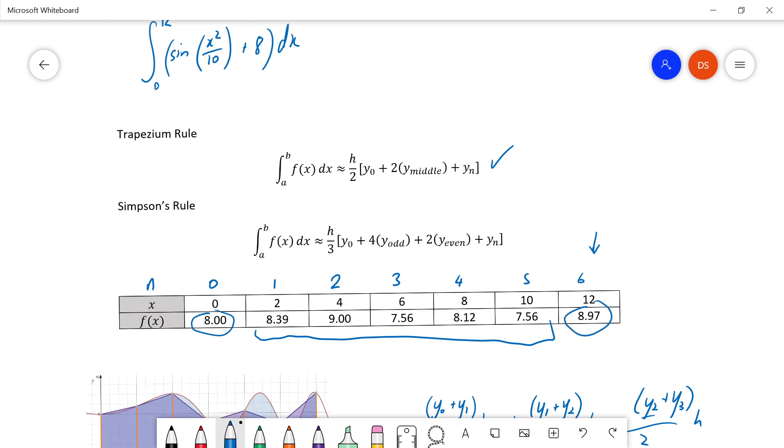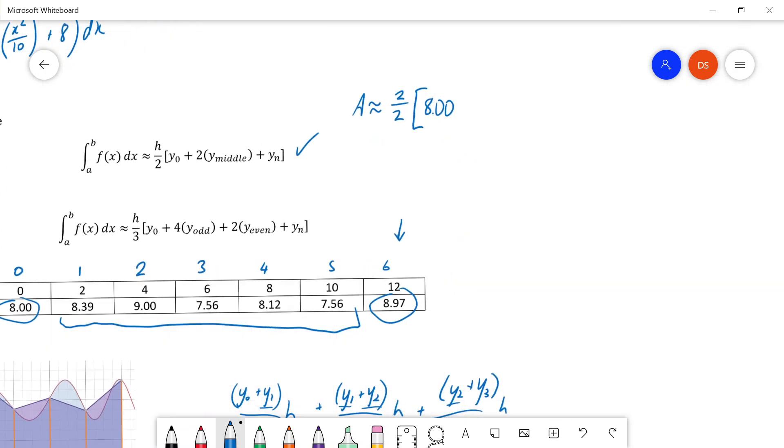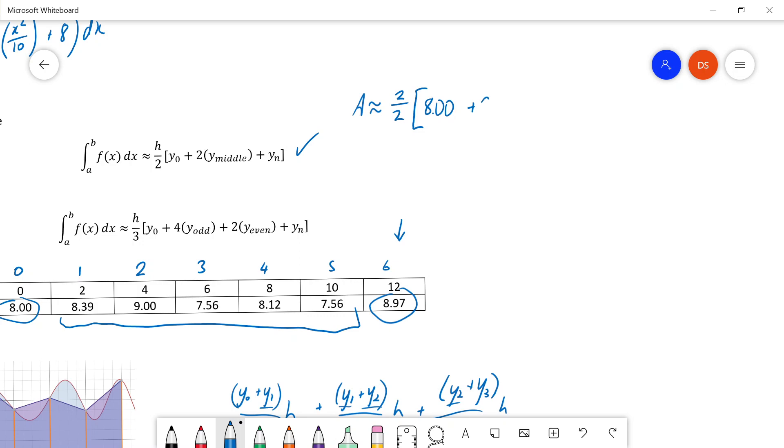So let's try that. The area is going to be approximately equal to h over 2, well h is 2 over 2, times 8.00, plus 2 times all the middle terms, plus the last term. And if I type that into my calculator, that will give me an approximation of the area.